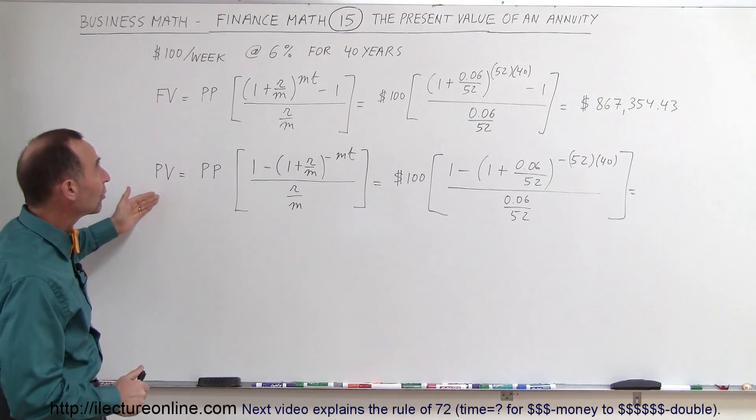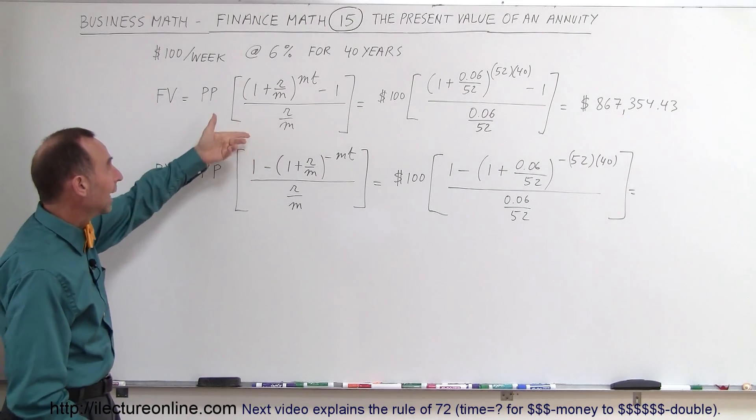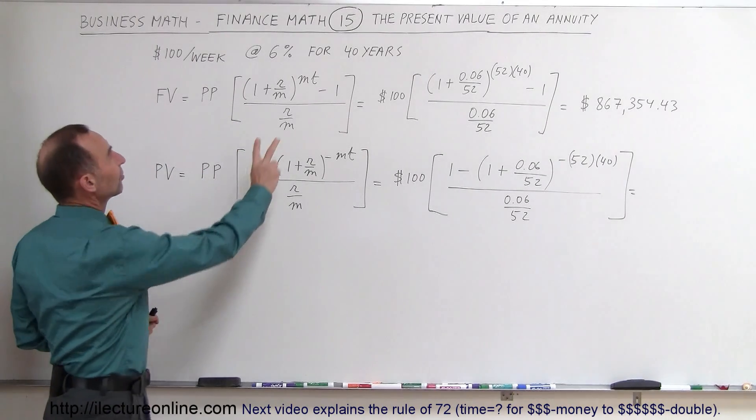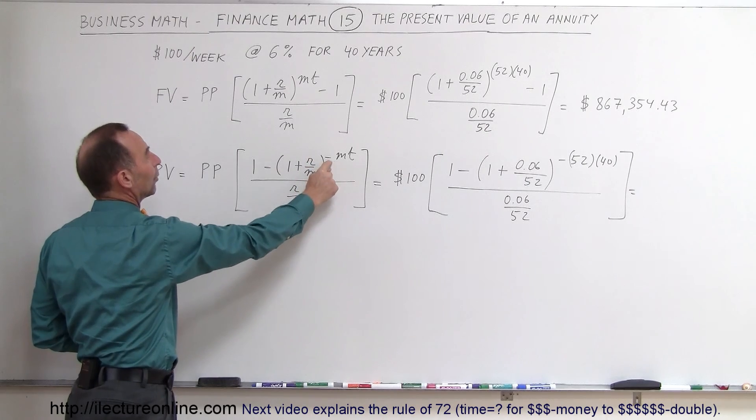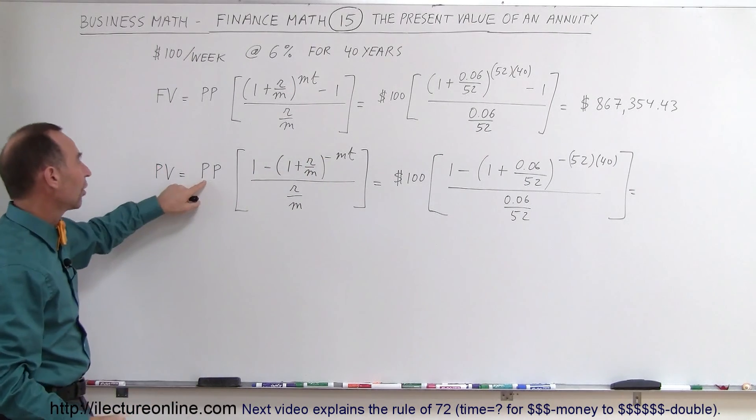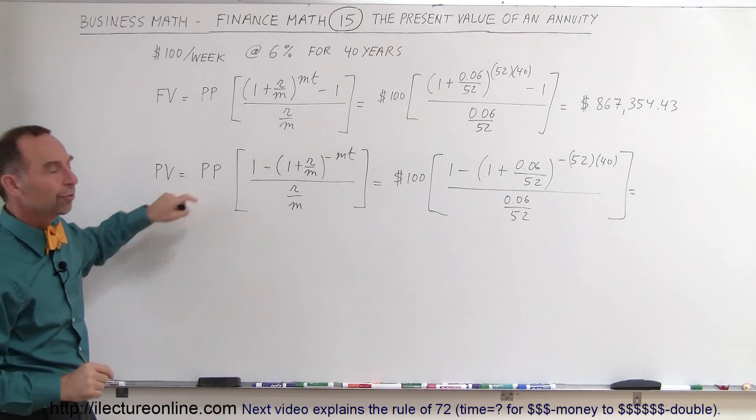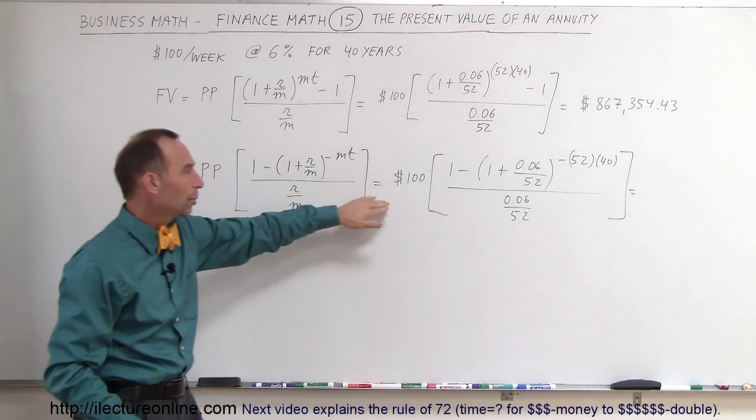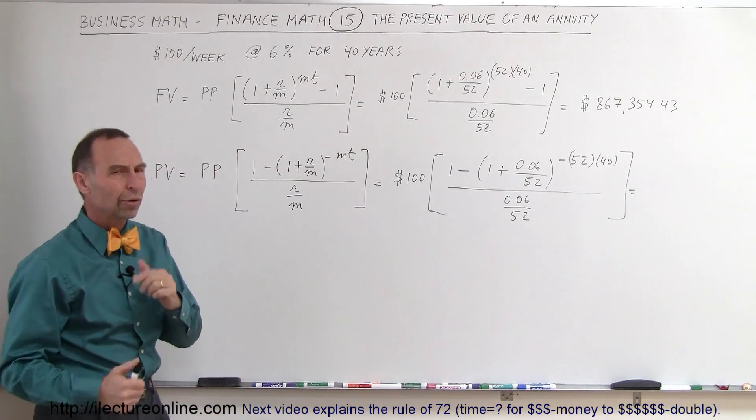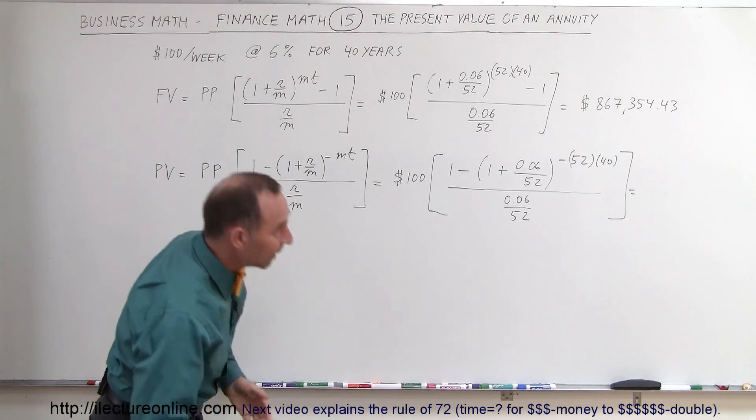Here's the equation. Notice that this is the equation for the future value, and the equation for the present value simply is these two things turned around with a negative exponent and then starting with the periodic payment over here. So that would be $100 per week, 52 conversions per year, and let's go ahead and figure out what that number is.